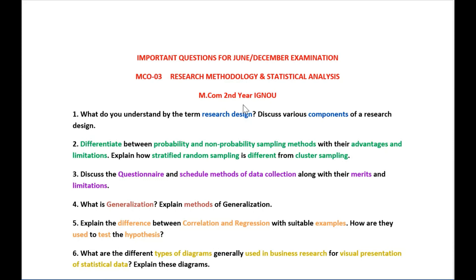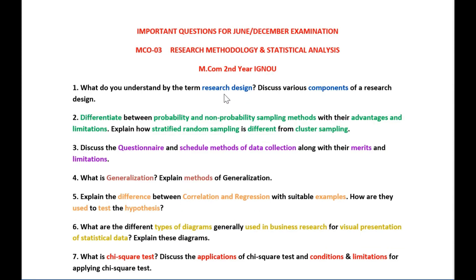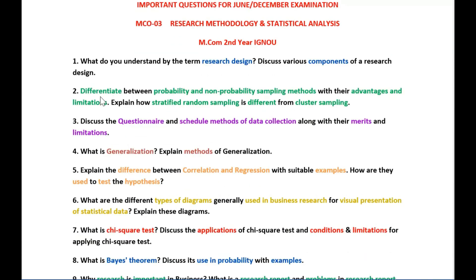The first question is on research design and what are its components. The next question is to differentiate between probability and non-probability sampling methods and state its advantages and limitations, and explain how stratified random sampling is different from cluster sampling.